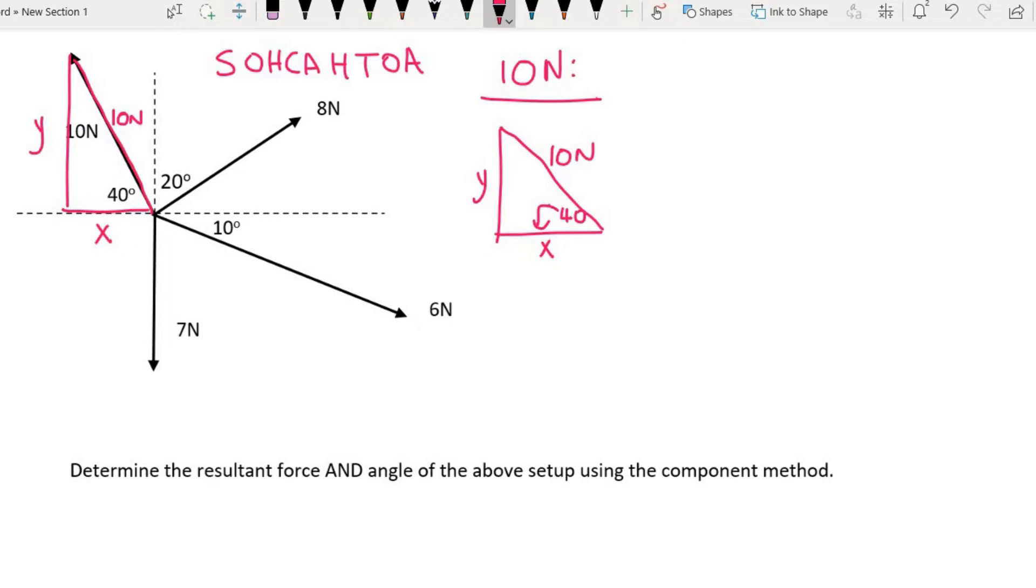For example we're looking for X. That's the adjacent and we already have the hypotenuse, so that will be cos. We can say cos 40 is equal to X over 10. You can get X alone by multiplying 10 by cos 40, and that will give us 7.66 newtons. If you just look at this force it's pulling more to the left hand side.